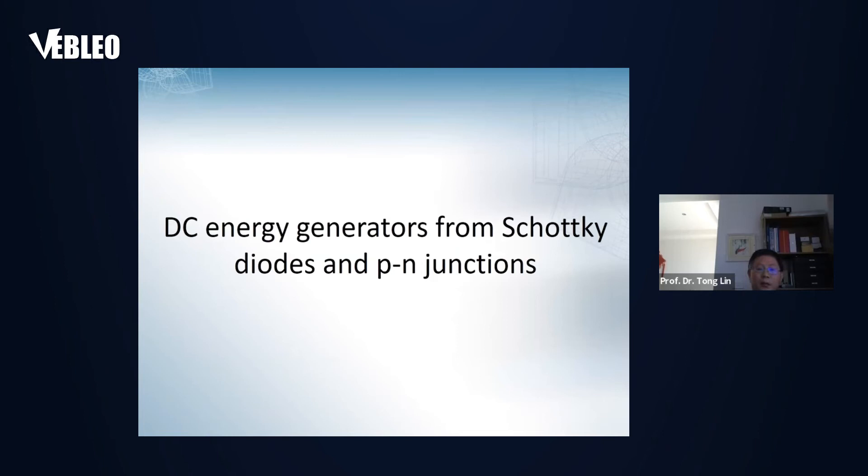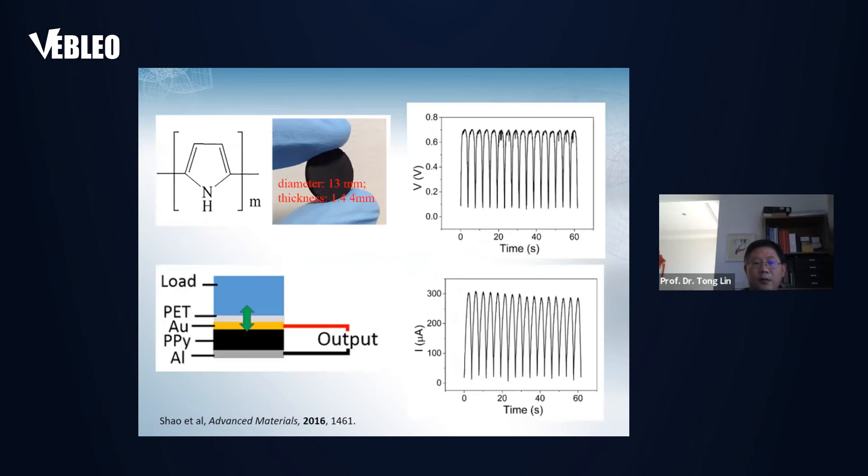The second part is about DC energy generator, which we also found in our laboratory. The work includes a Schottky diode and PN junction. For the earlier finding, initially we found if we use polypyrrole to make a dense disk and sandwich this disk with aluminum foil and gold foil, under compression, the device can generate electrical power. Very interestingly, this device only generates DC power. Each peak comes from compression and decompression. The voltage is around 0.7 volt. The current disk is about diameter 13 millimeter and thickness 1.44 millimeter. This PPY disk can generate around 300 microamps output.